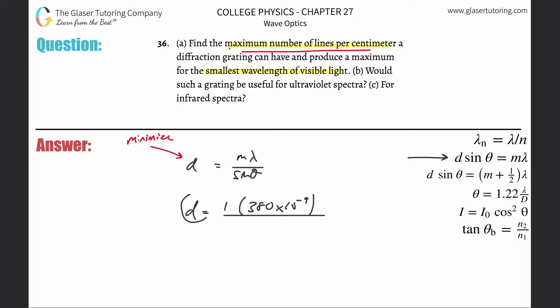If I want to minimize d, I got to maximize the denominator here, and the maximum value of sine is when the angle is 90 degrees. This would become a one, so in other words this is just equal to 380 or 3.80 times 10 to the minus seventh meters.